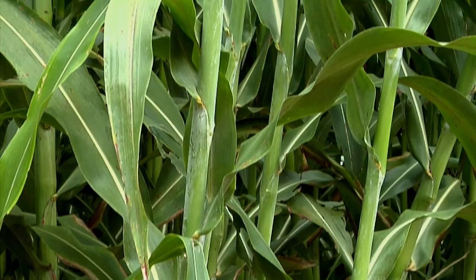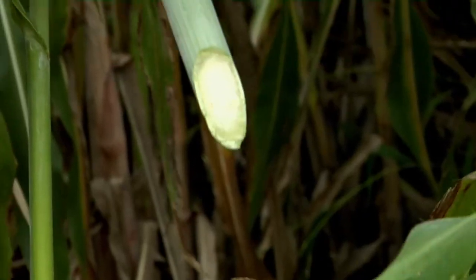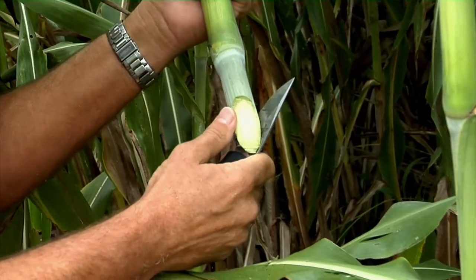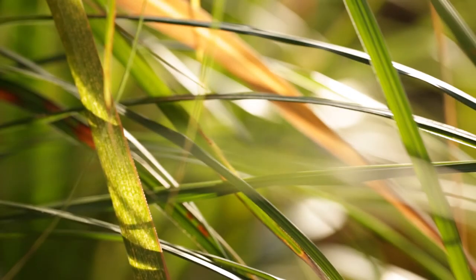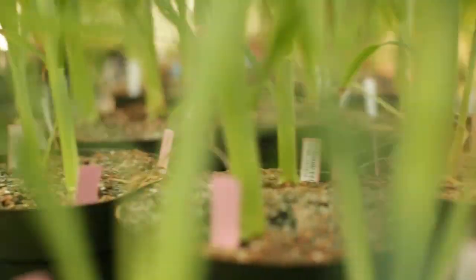Then the question would become not, how do I grow as much starch as I can per acre, or how much vegetable oil can I grow per acre, but rather how much cellulose can I grow per acre. And when that becomes the question, your choice of crop changes, and then you start growing things like switchgrass, like miscanthus, like sorghum.